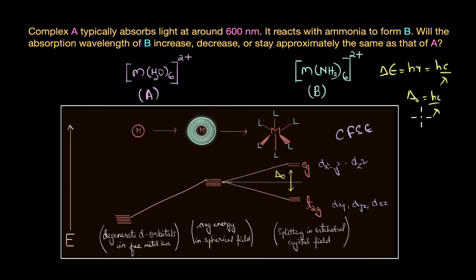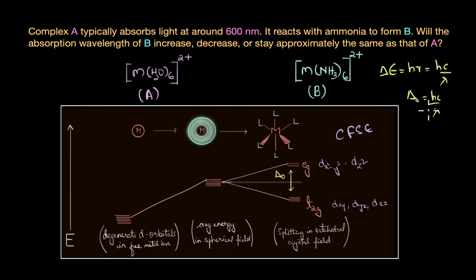This equation tells us: if the energy difference between these two levels is larger, the absorption wavelength decreases; and if the difference in energy is smaller, the absorption wavelength is longer — the complex will absorb light at a much longer wavelength. Now, what determines the magnitude of delta naught? The ligands.